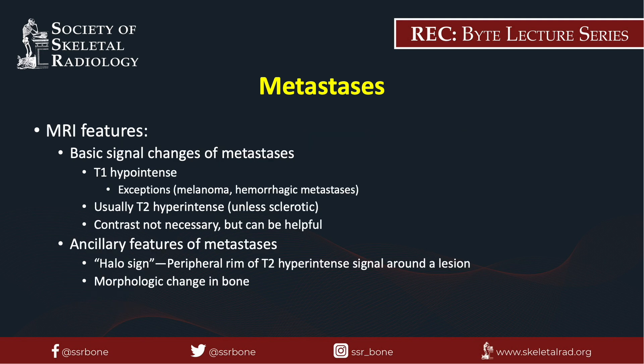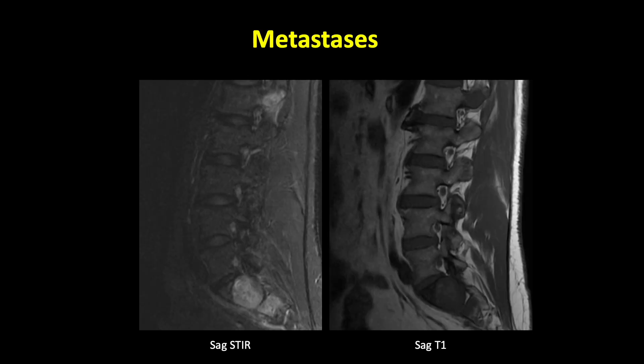The MRI appearance of metastases includes T1-hypointense lesions, with the exception of melanoma and hemorrhagic metastases, whereby lesions may appear hyperintense on T1-weighted imaging but will remain hyperintense with fat saturation. Metastases are usually T2-hyperintense unless the lesions are sclerotic or fibrotic. Contrast is typically not necessary but can be helpful. Other features may include a halo sign, where there is a peripheral T2-hyperintense signal surrounding a lesion, as well as morphologic changes of the bone. Here's an example of a patient with metastatic lung adenocarcinoma showing lesions hyperintense on STIR and hypointense on T1 within the sacrum and posterior elements of L1.